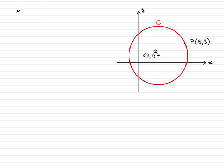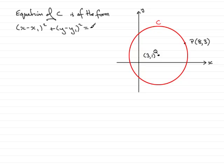Well let's just remind you that the equation of the circle C is of the form: x minus x₁ squared plus y minus y₁ squared equals r squared.